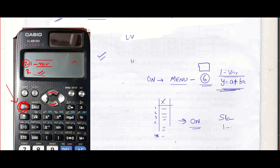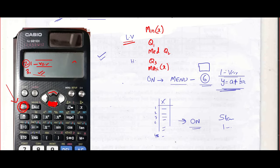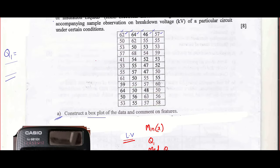Press the down button. As soon as you press that, you will be able to see minimum value of X — that's the lowest value — quartile 1, median (which is quartile 2), and quartile 3. Press the down button again and you will see maximum value of X. So here we have the five number summary.